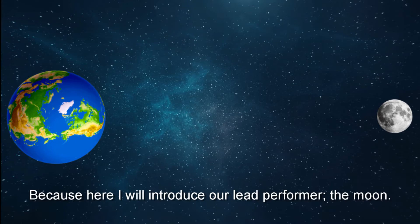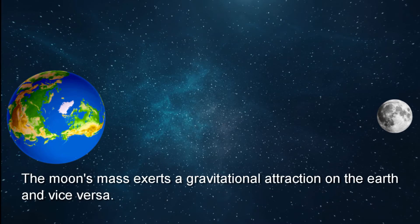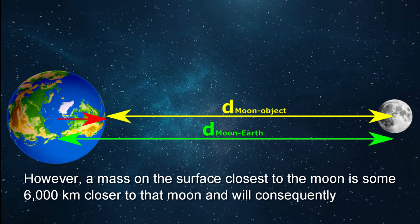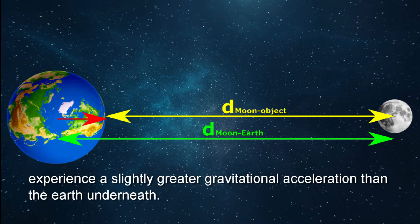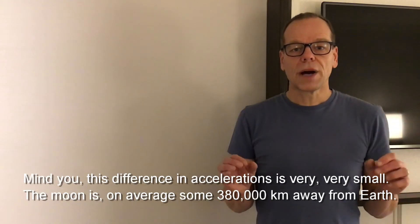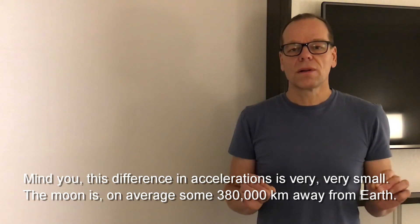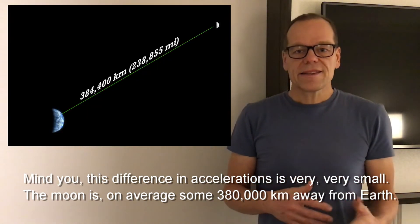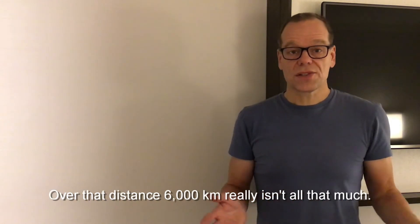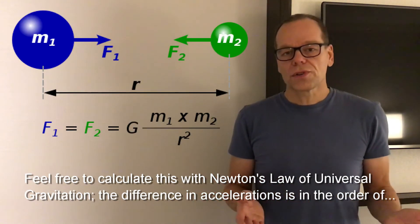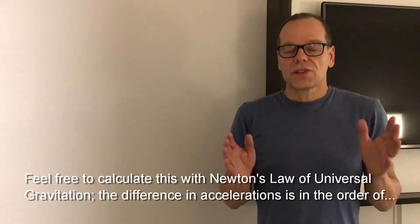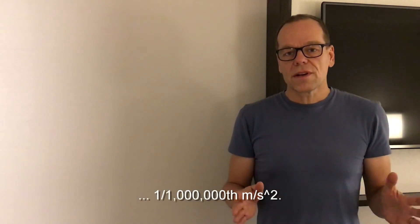Because here I will introduce our lead performer: the moon. The moon's mass causes gravitational attraction on the earth and vice versa. However, a mass at the surface of the earth closest to the moon is some 6000 kilometers closer to that moon and will consequently experience a slightly greater gravitational acceleration than the earth underneath. Mind you, this difference in acceleration is very, very small. The moon is on average some 380,000 kilometers away from the earth. But over that distance, 6000 kilometers really isn't all that much. Feel free to calculate this with Newton's law of universal gravitation. The difference in accelerations is in the order of one millionth of a meter per second squared.